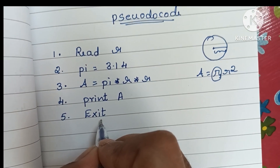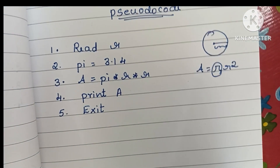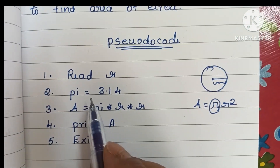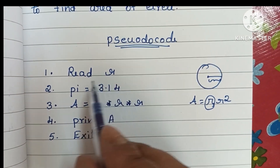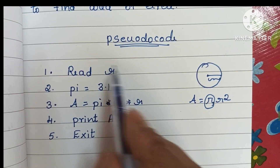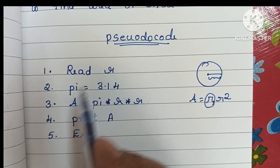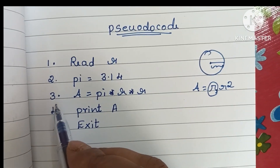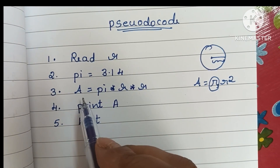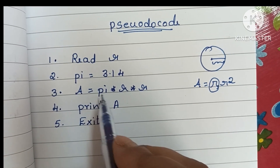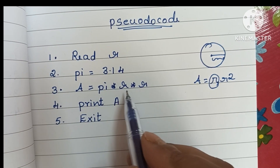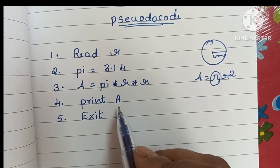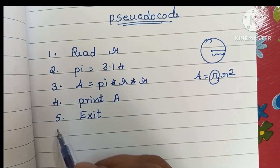Step five is exit — you can write exit or leave it. So to recap the pseudocode: first, read r; second, declare pi as 3.14; third, calculate area as A equals pi into r into r; fourth, print A; fifth, exit.